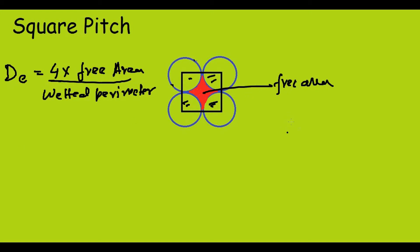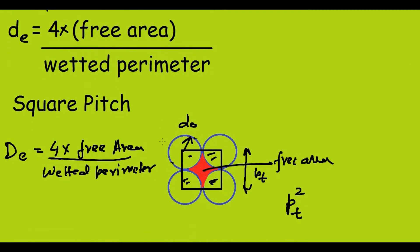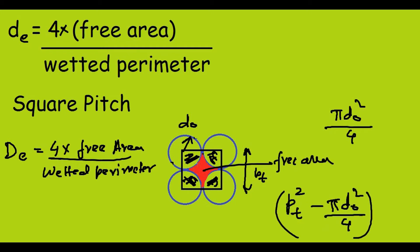The area of this square is Pt squared, because the side is the tube pitch Pt. The radius of these circles is DO. Adding 4 quarter circles gives one full circle, so we subtract πDO²/4. This gives the free area as Pt² − πDO²/4, which is the area of this red shaded portion.